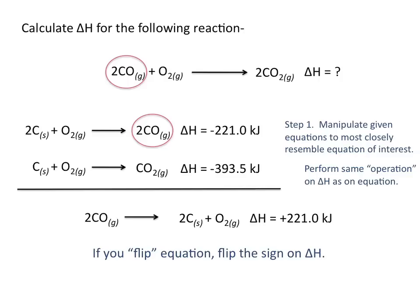So if 2 carbon plus O2 gives us 2 CO with a delta H value of negative 221 kilojoules per mole, then 2 CO going to 2 carbon plus O2 has a delta H value of positive 221 kilojoules per mole.